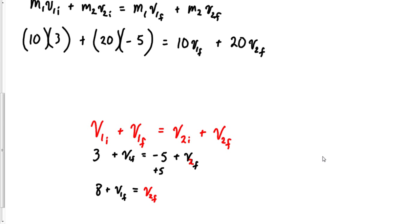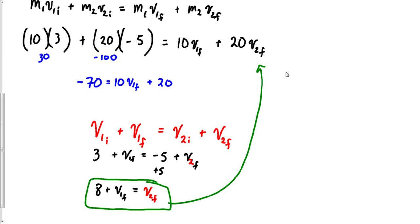I'm going to add 5 to both sides. So I'll have 8 plus v1 final equals v2 final. And now all I'm going to do is take this equation and substitute it into this equation. So let's see if we can solve this equation. 10 times 3, that would be 30. 20 times negative 5 would be negative 100.